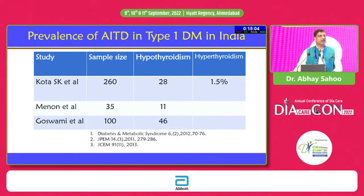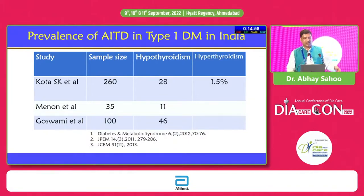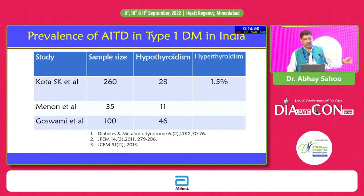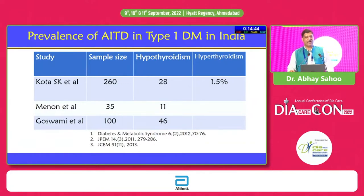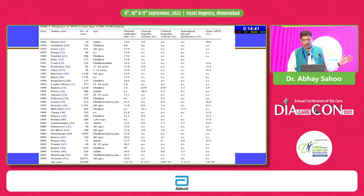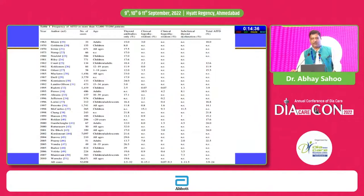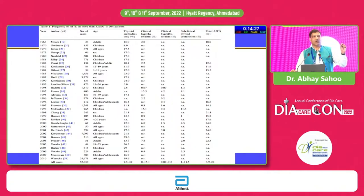Regarding autoimmune thyroid disorders among type 1 diabetes in India, one study from Odisha with 260 patients found hypothyroid at 28% and hyperthyroid at 1.5%. Larger studies with more than 52,000 type 1 diabetes patients clearly show that autoimmune thyroiditis is significantly high in type 1 diabetes compared to the general population, with TPO antibody positivity up to 40% in some studies.